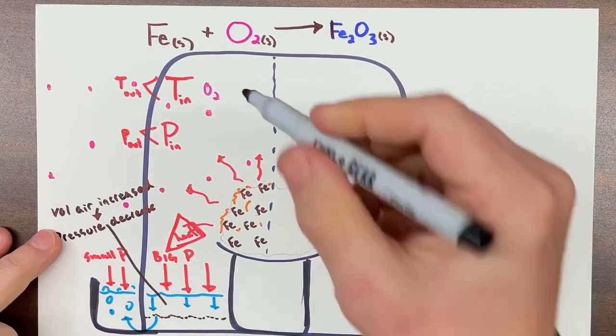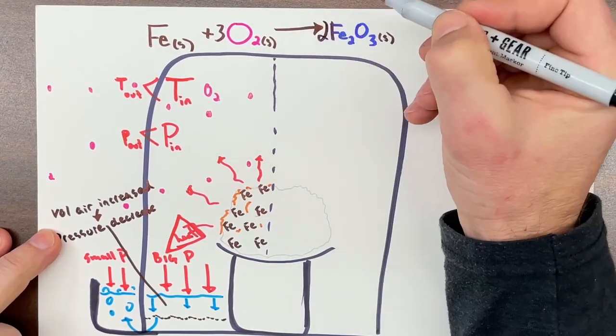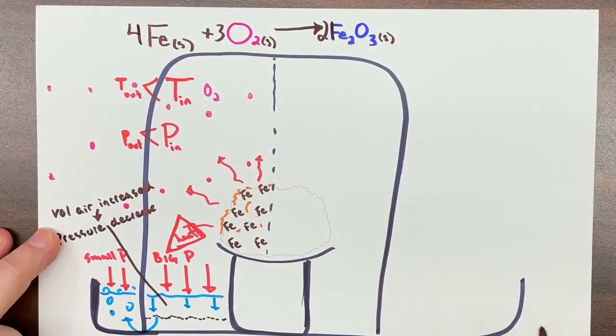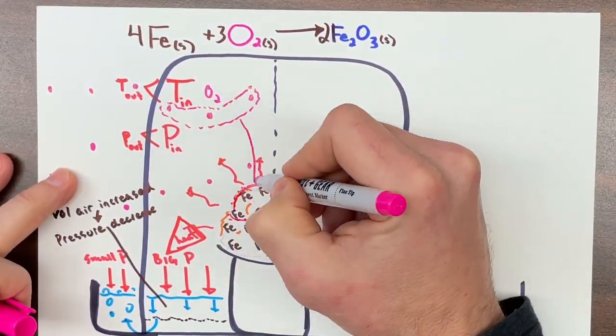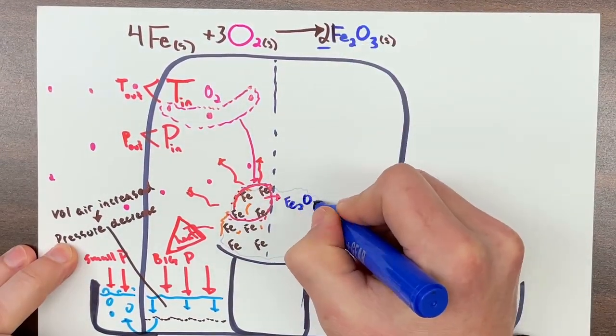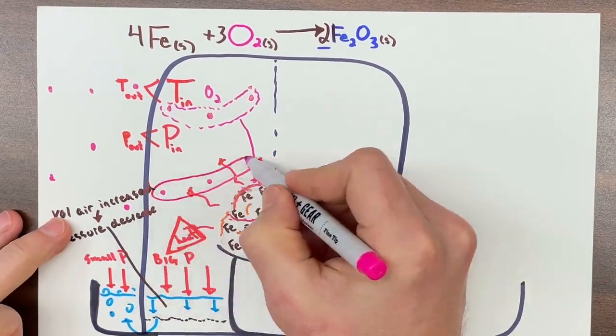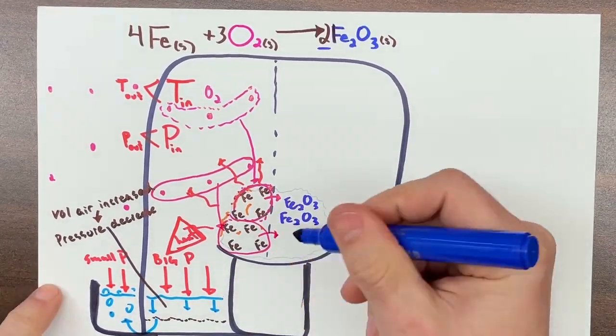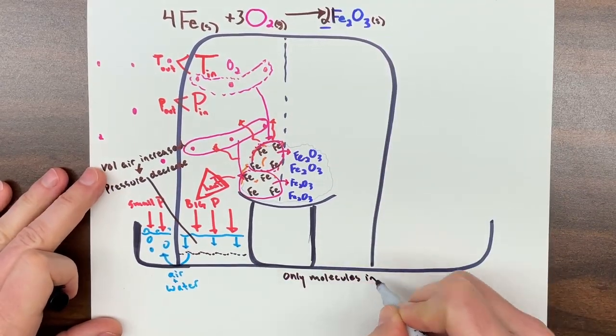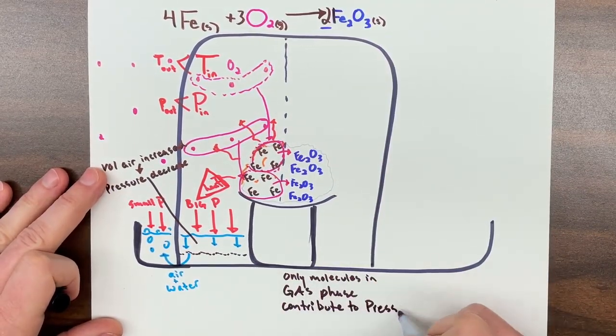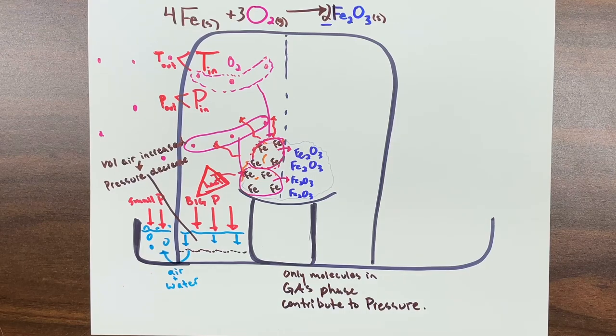In this reaction, four irons react with three oxygen gases to produce two iron oxides. That's like these three oxygens reacting with these four irons to produce two iron oxides. I drew that happening one more time, but we can imagine it happening many, many more times. Now a general principle of air pressure is only molecules in the gas phase contribute to air pressure. So let's put some pieces together.